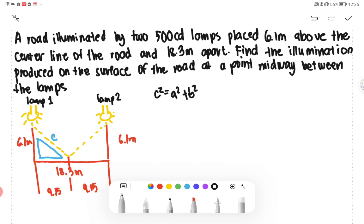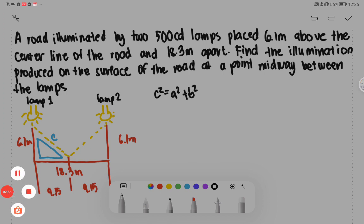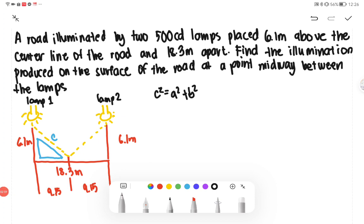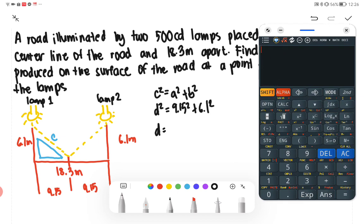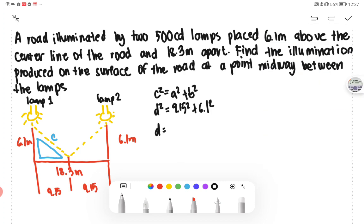Let C be our distance. We have here D squared is equivalent to 9.15 squared plus 6.1 squared. Therefore, we will obtain the value of our D, which is equivalent to 10.99 or simply 11, approximately 11.